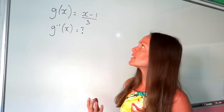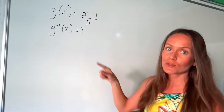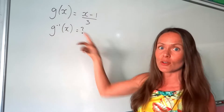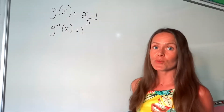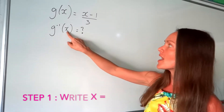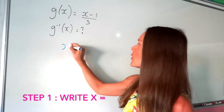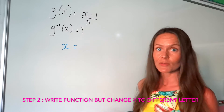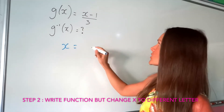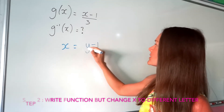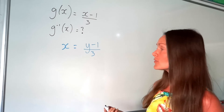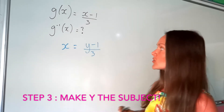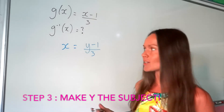In this one, I've been given a function called g of x up here, and I need to work out the inverse of g of x. Just like before, start by writing down x equals, followed by your function, but changing the letter x to a different letter. So I'm just going to change it to y instead of x. Now I have to rearrange to make y the subject of the formula — that just means rearrange to get y equals.